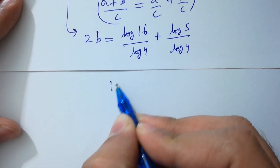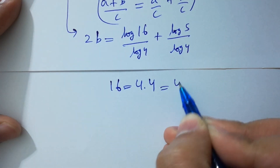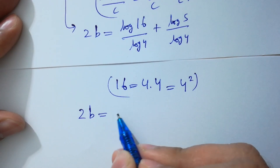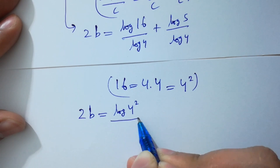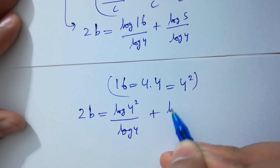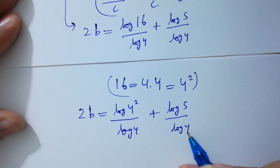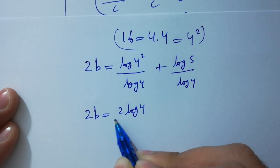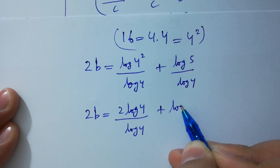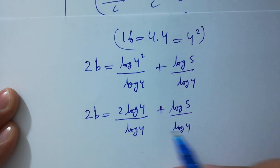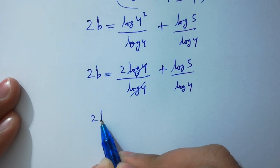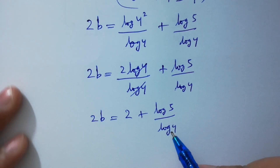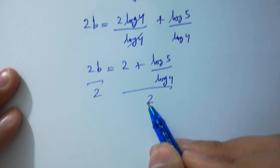Since 16 equals 4 times 4, which is the same as 4 squared, we have 2B equals log 4 squared over log 4 plus log 5 over log 4. This equals 2 log 4 over log 4 plus log 5 over log 4. Log 4 and log 4 will be cancelled.